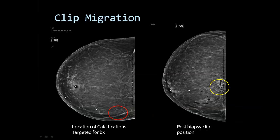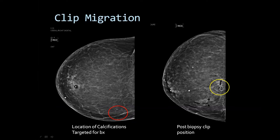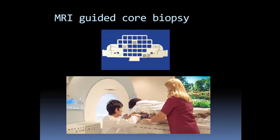Regarding clip migration: here, calcifications in the medial right breast on the CC view were targeted, and after biopsy the clip migrated medially. If clip migration occurs and the patient needs excision, obtain pre-magnification views to identify any remaining calcifications so those can be localized for surgery while leaving the migrated clip in place. Always document clip migration in the report so the protocoling clinician knows to look for calcifications rather than the clip.